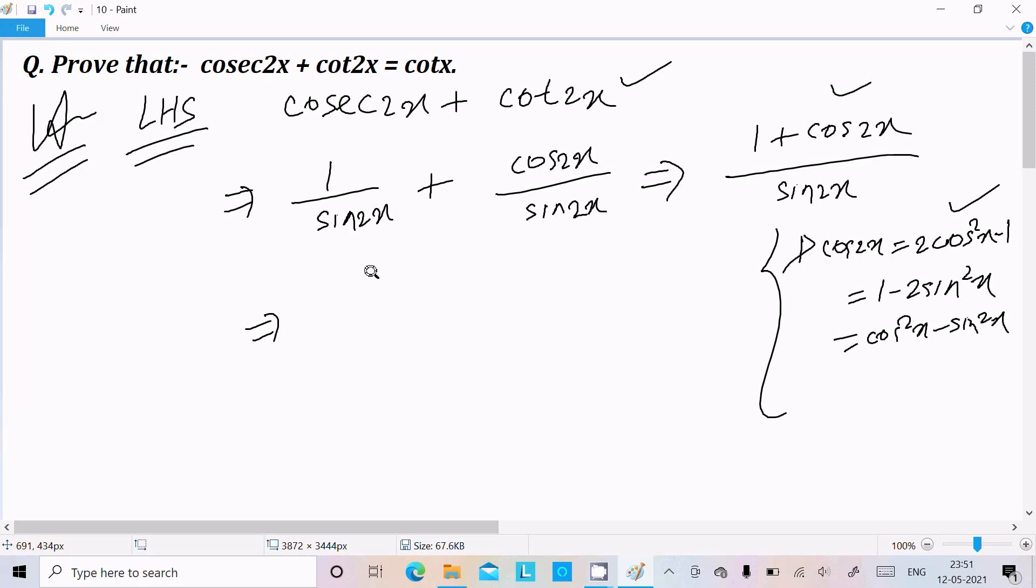So here 1 plus we can write this one cos 2x to 2 cos squared x minus 1. And for sin 2x the formula is 2 sin x into cos x. So this 1 will cancel.